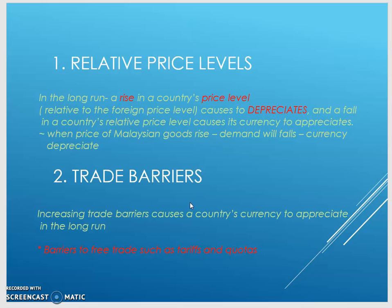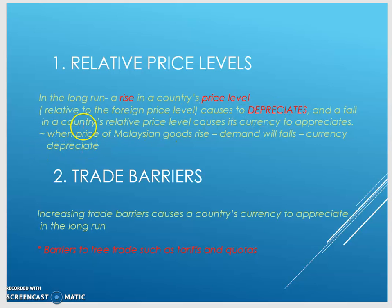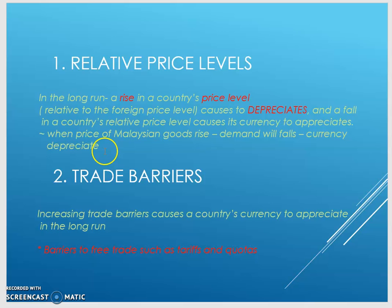The first factor is relative price levels. In the long run, a rise in a country's price level relative to foreign price levels causes its currency to depreciate, and a fall in relative price levels causes it to appreciate. When the price of Malaysian goods rises, demand falls and the currency depreciates.